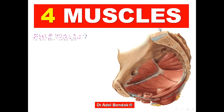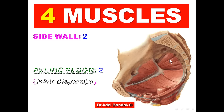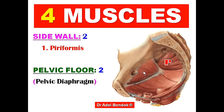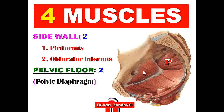We have four muscles in the wall of the pelvis: two on the side wall — piriformis in front of the sacrum, and obturator internus on the inner surface of the obturator membrane — and two in the floor of the pelvis.